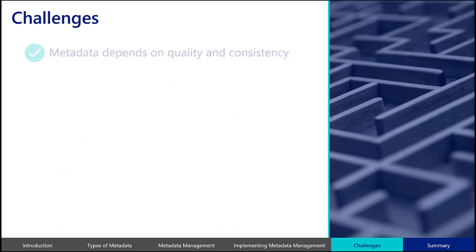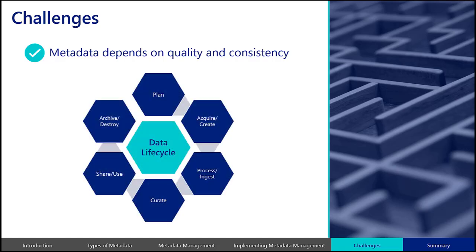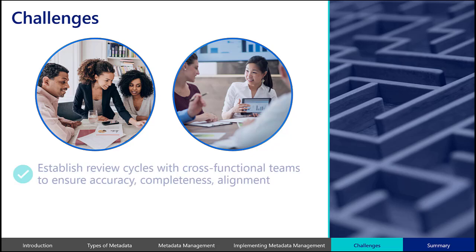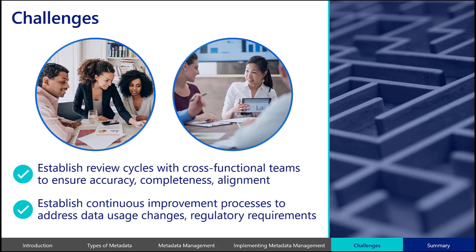The usability of metadata depends on its quality and consistency. Data quality is a concern throughout the data lifecycle because quality issues can be created or discovered at any time. A data quality management team may collaborate with a metadata management team to monitor metadata for its quality and establish controls to promote adherence to metadata standards in addition to other data quality processes. Establishing regular review cycles and involving cross-functional teams in these reviews can help ensure metadata remains accurate, complete, and aligned with evolving business needs. Continuous improvement processes should be a core component of metadata management to adapt to changes in data usage and an evolving regulatory environment.